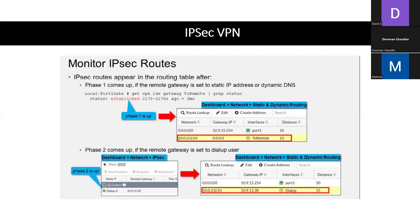When you set up the remote gateway to dial-up user, by default a static route for the destination network is added after phase two comes up. The distance set for the static route is 15. If phase two goes down, the route is removed from the routing table.